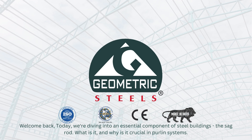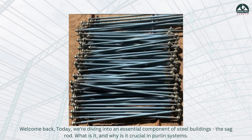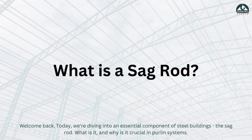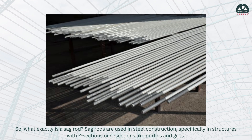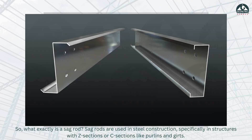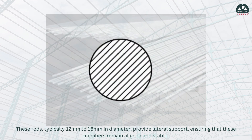Welcome back. Today we are diving into an essential component of steel buildings: the sag rod. What is it and why is it crucial in purlin systems? Sag rods are used in steel construction, specifically in structures with Z sections or C sections like purlins and girts. These rods typically range from 12 millimeters to 16 millimeters in diameter.